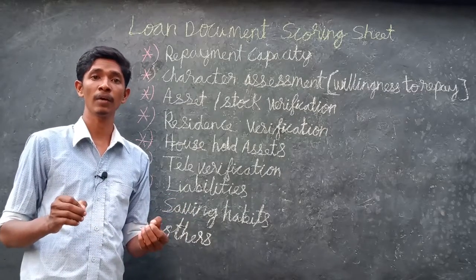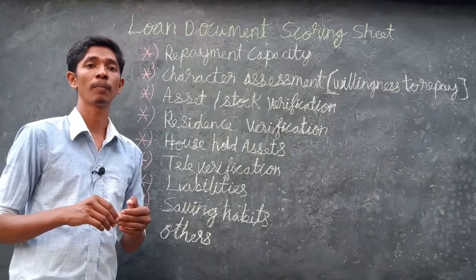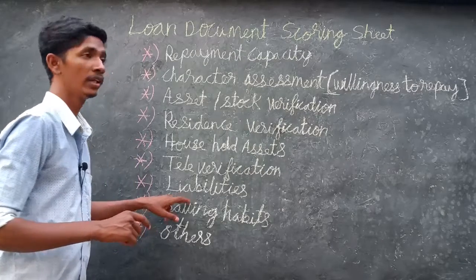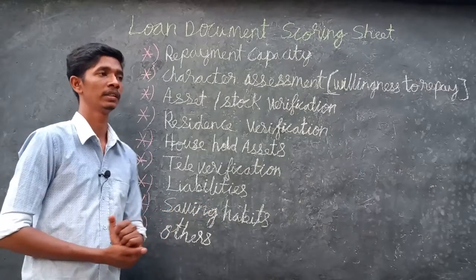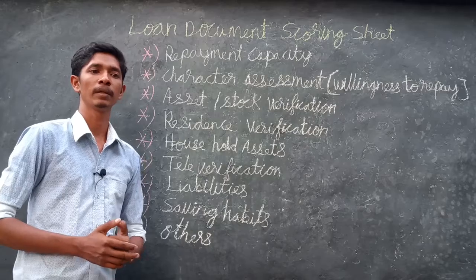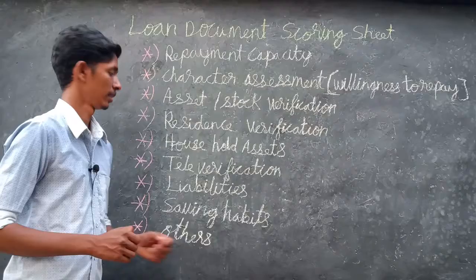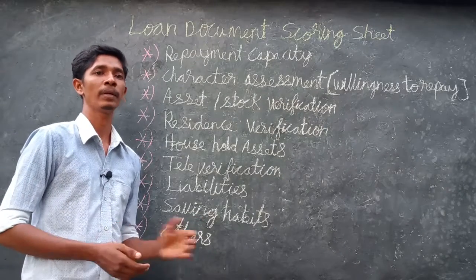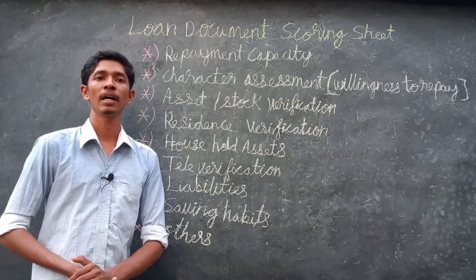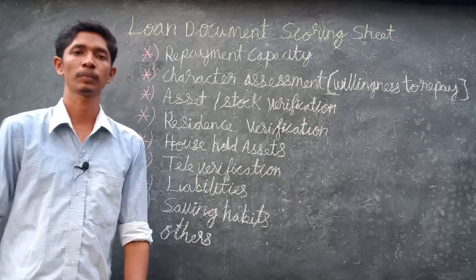If the customer has credit liabilities — loans to repay in other banks, NBFCs, or cooperative societies — those are verified as well. Saving habits are also assessed: if the business is lost, how will the customer repay? Their character and saving habits are key to loan repayment. ID proof is also identified. Thank you for watching.